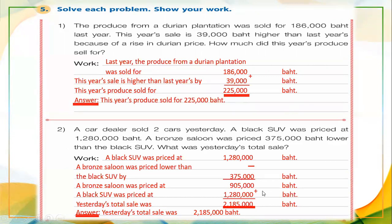Now we know both car values: the black SUV is one million two hundred eighty thousand baht, and the bronze saloon is nine hundred five thousand baht. Adding both values together — nine hundred five thousand plus one million two hundred eighty thousand — yesterday's total sale is two million one hundred eighty-five thousand baht.